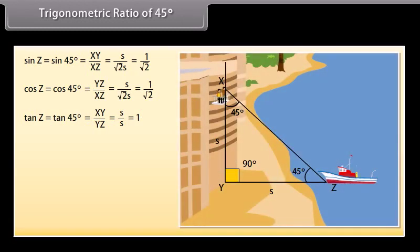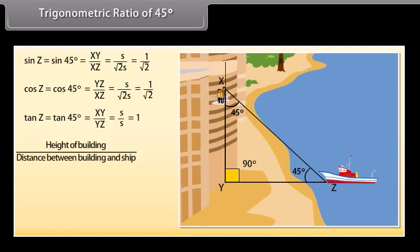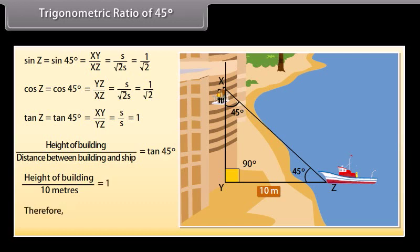Recall the discussion of Vedika and Anvesha at the beginning of the lesson. Height of building divided by distance between building and ship equals tan 45°. Substituting the values: height of building upon 10 meters equals 1. Therefore, the height of the building is 10 meters.